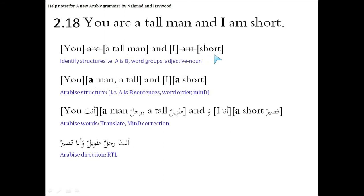When we put this together and translate it: anta - we say anta not anti because we're talking about a man, so therefore it's the masculine dhamir anta. Anta rajulun tawilun wa, for 'and', anna for 'I', qasirun, 'short'. So we put that all together, we can write it as this: anta rajulun tawilun wa anna qasirun.